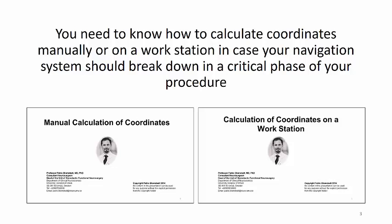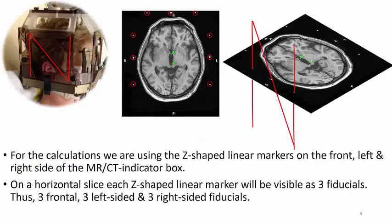I will here briefly demonstrate how this is done on a workstation. In order to perform these calculations in the Lexell system, we are using the Z-shaped linear markers on the front, left and right side of the MRI CT indicator box.